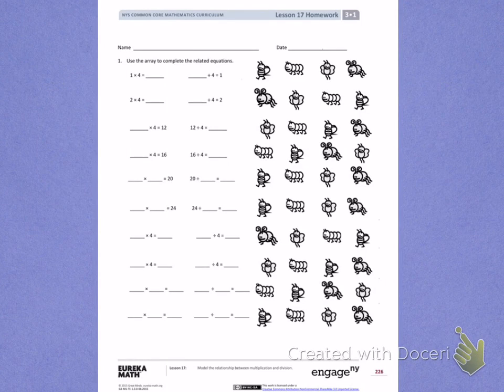This is Module 1, Lesson 17. Today's objective is to model the relationship between multiplication and division.